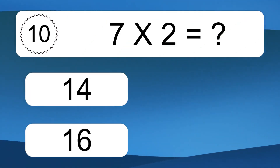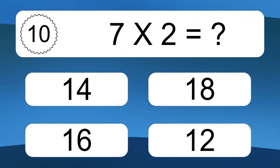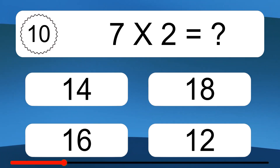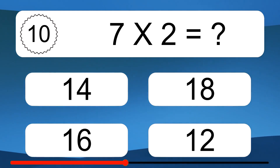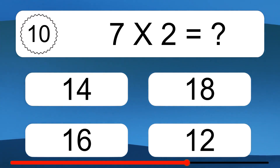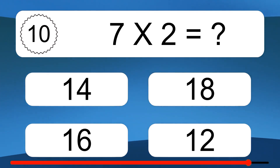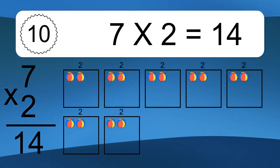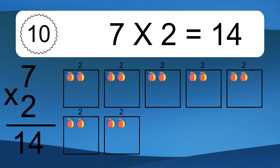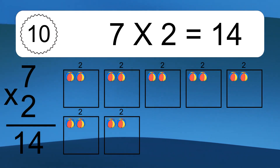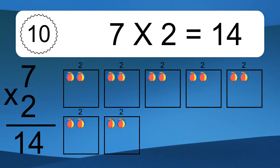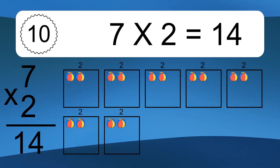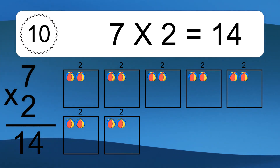7 times 2 equals what? 7 times 2 equals 14. We have 7 boxes, and each box has 2 colorful balls inside. If you count all the balls in all the boxes together, you will have 7 times 2 balls. This equals 14 balls.